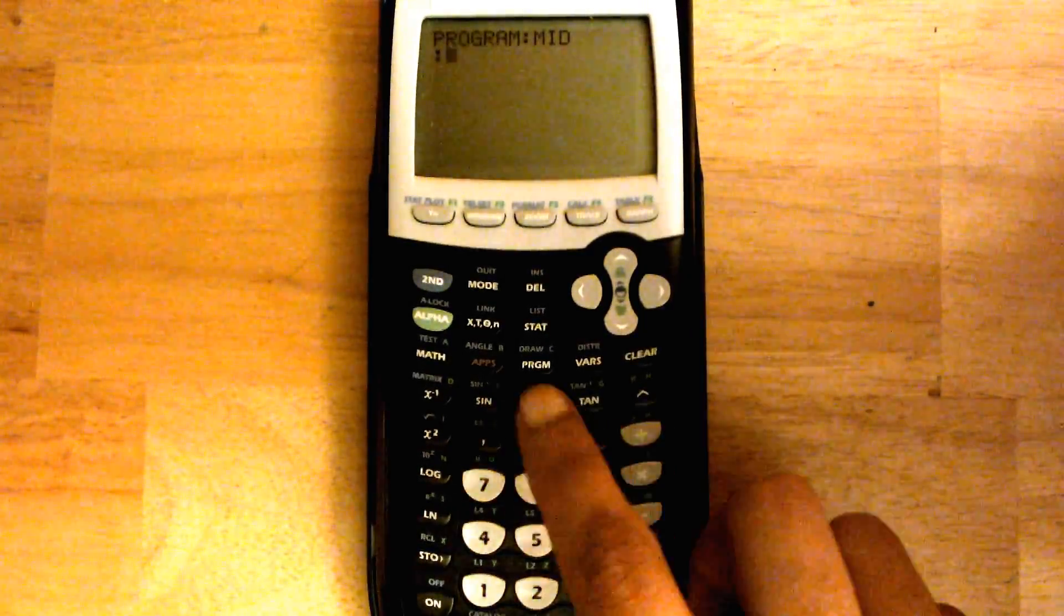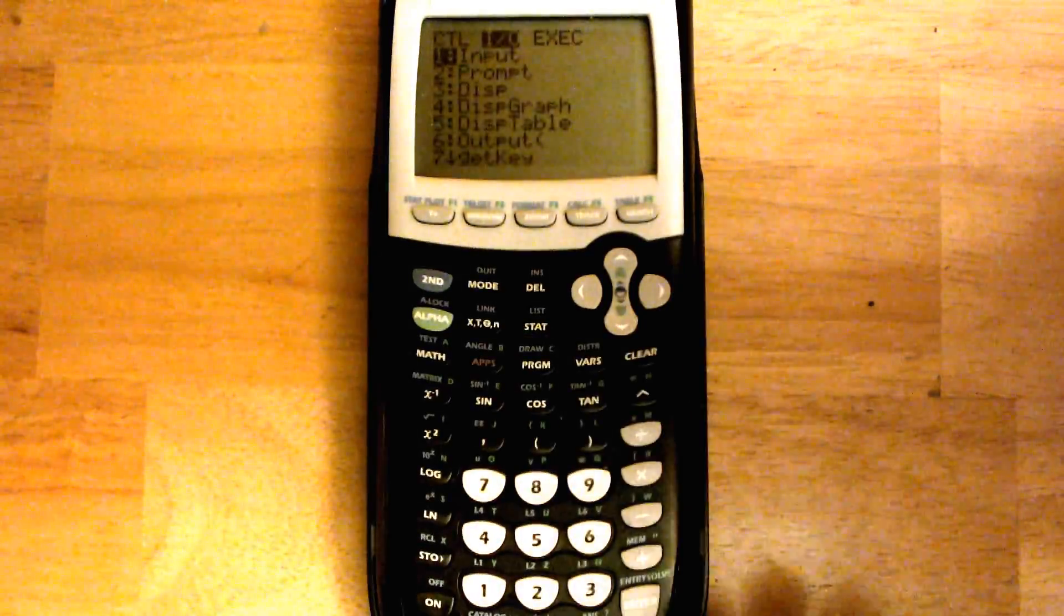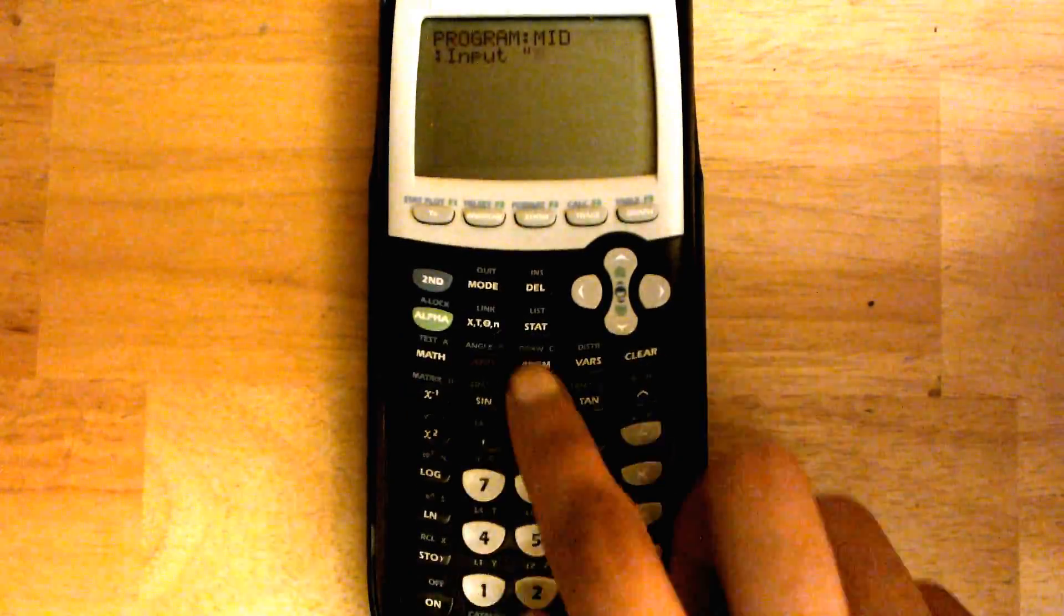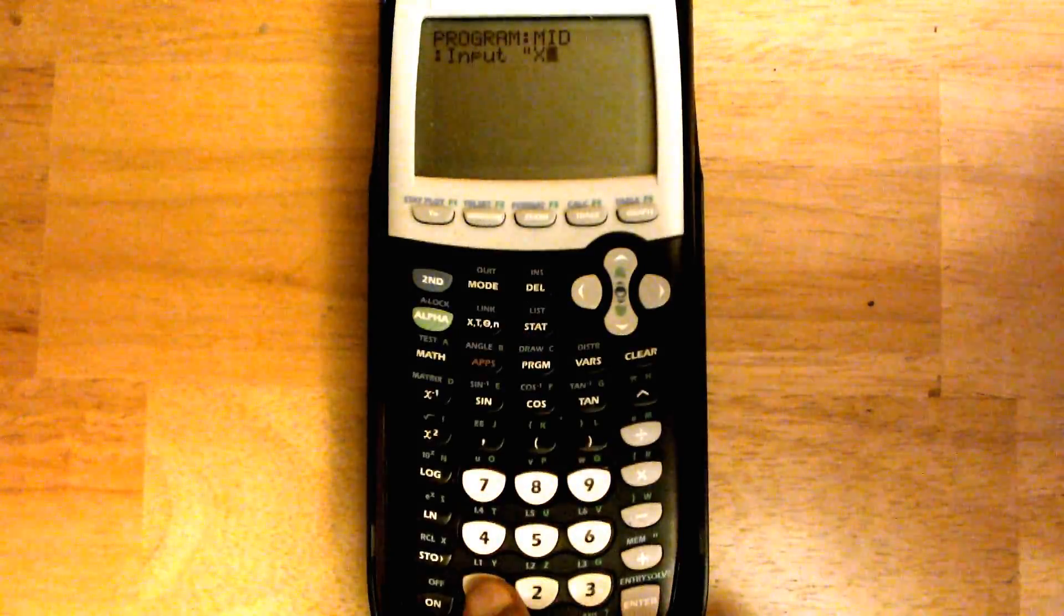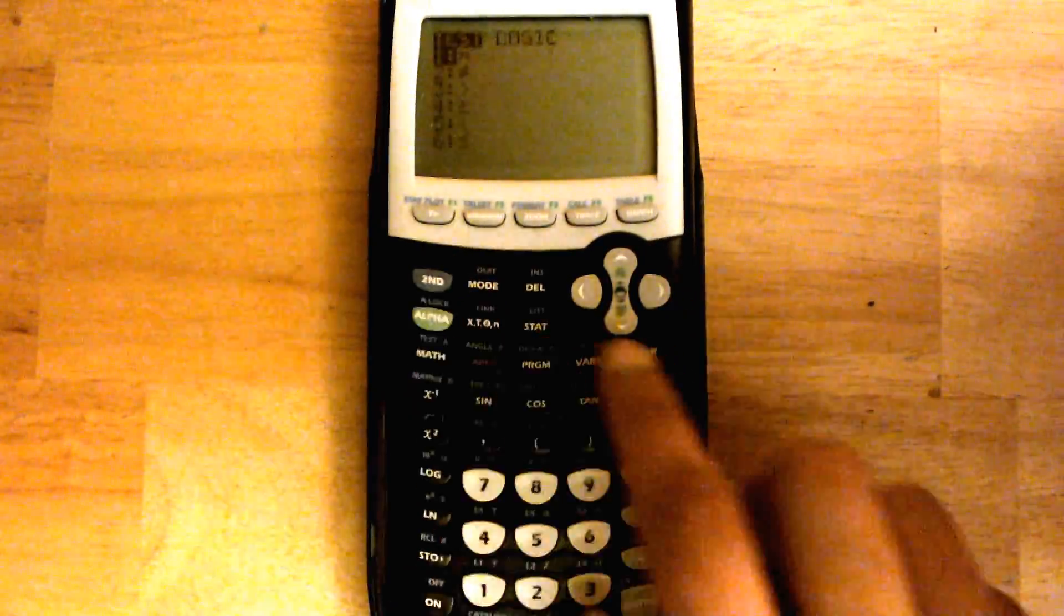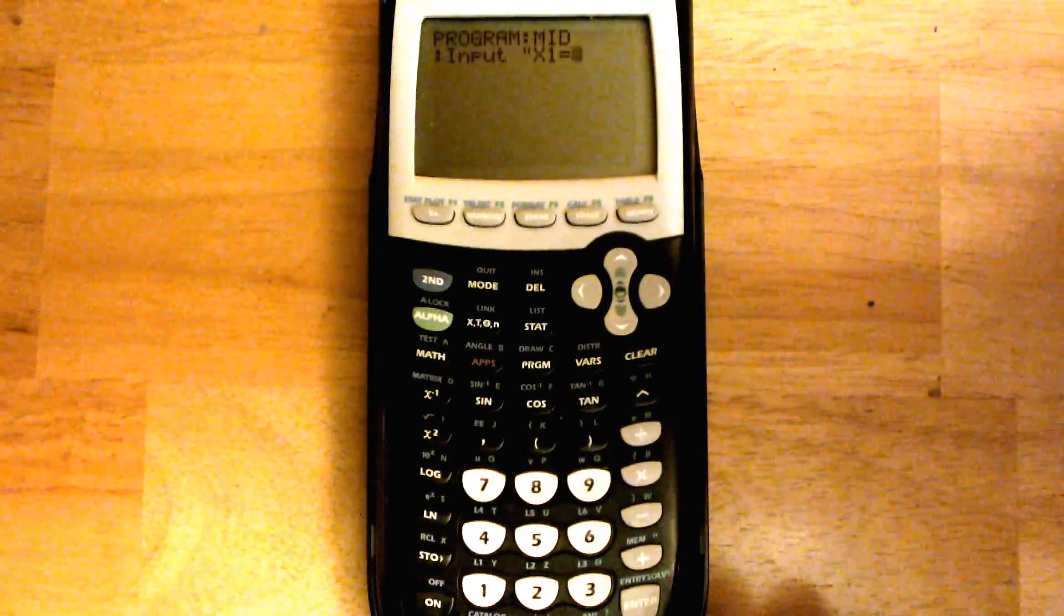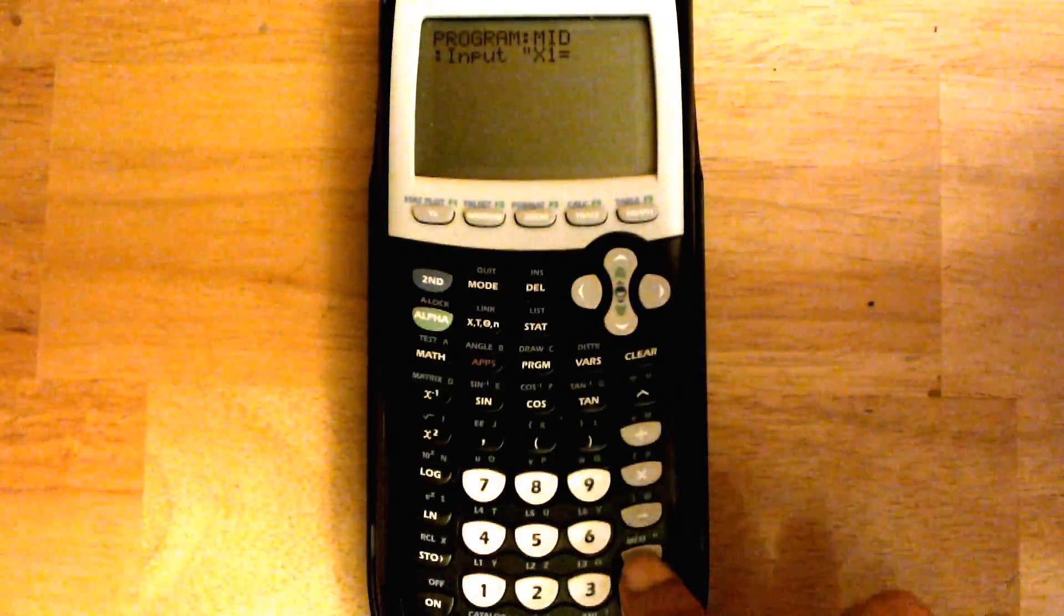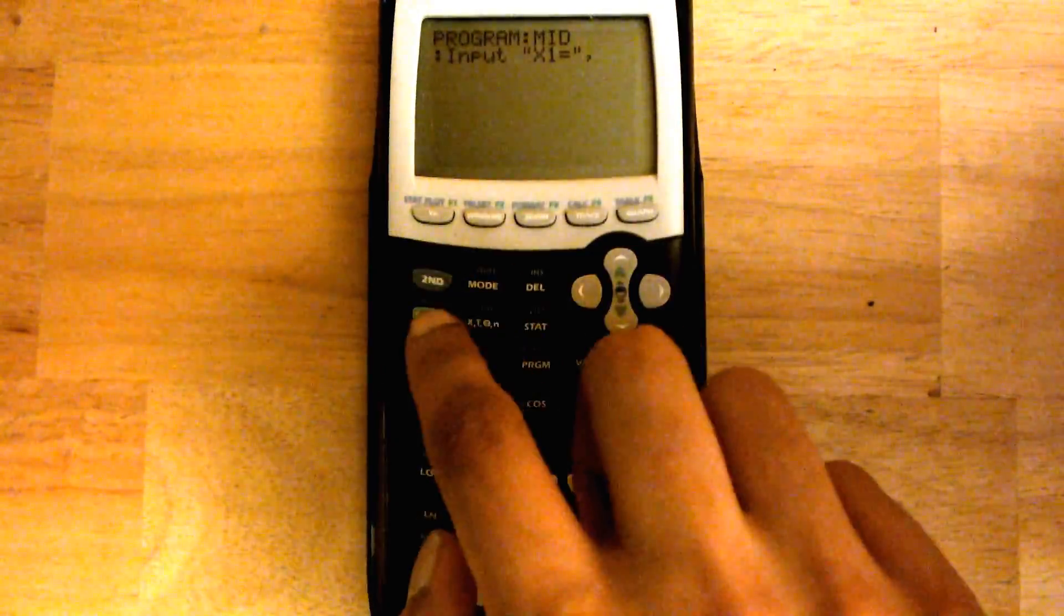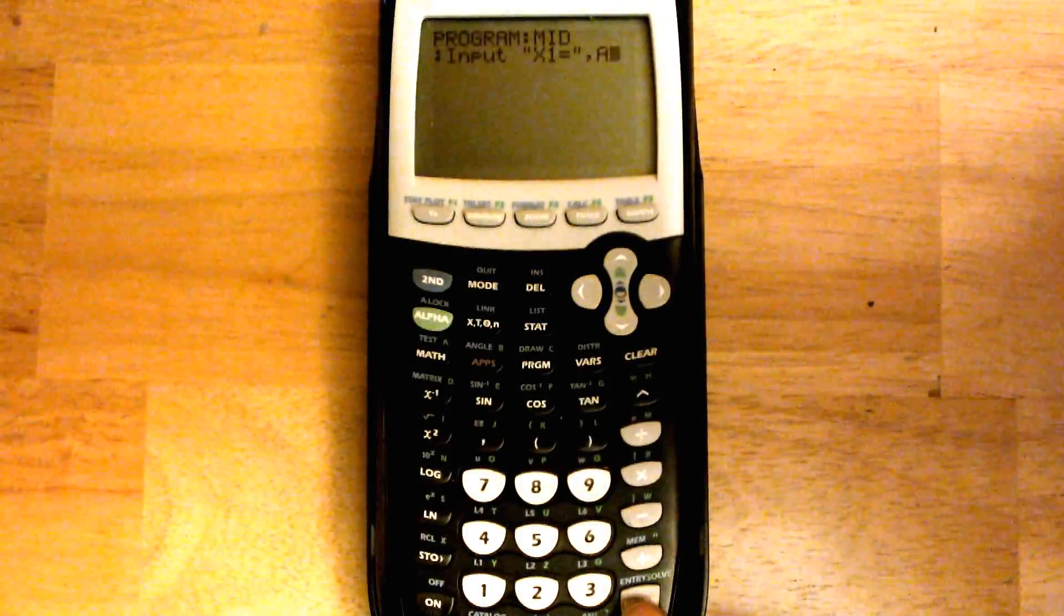And then we're going to put in the code. So hit program, slide over one, enter. Enter, alpha plus, x1, second math, enter. Alpha plus, comma, and then alpha math. Then hit enter.